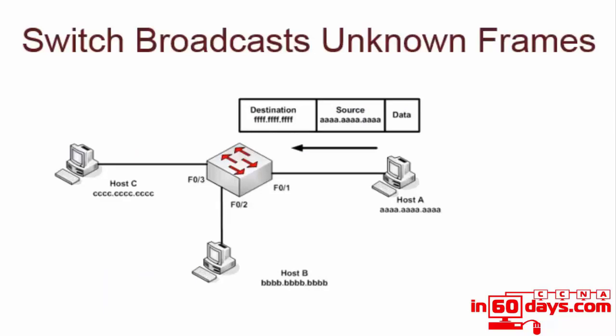If a switch doesn't recognize the destination address of an incoming frame, it will send a copy of that frame out of every single attached port — apart from the port the frame was received from. Here you can see host A sending out a frame with the all-F's broadcast address, which in decimal for IPv4 would be 255.255.255.255, and this is repeated out of every single interface.